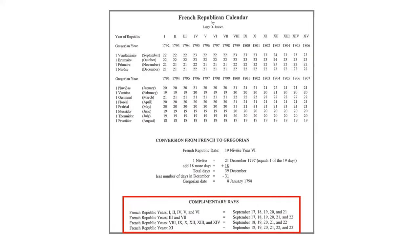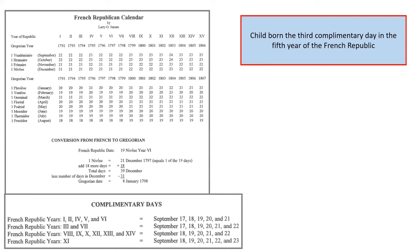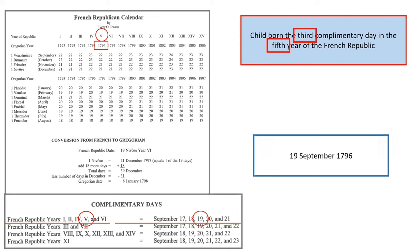How do you change a complementary day to the Gregorian date? As an example, changing the third complementary day in the fifth year of the republic. Step 1: Determine the Gregorian year for the fifth year of the republic. Using the complementary days section at the bottom of the handout, year five is found on the first line. Step 2: To the right of the fifth year, the five complementary days are shown as September 17, 18, 19, 20, 21. The third complementary day is the 19th. Step 3: At the top of the handout page, it shows that September in the fifth year occurred in 1796, making the Gregorian date 19 September 1796.